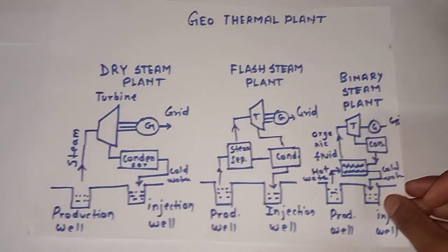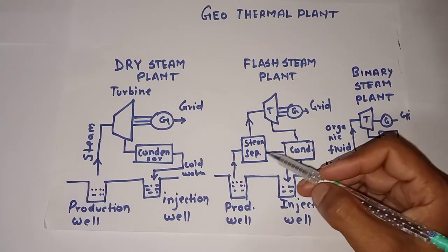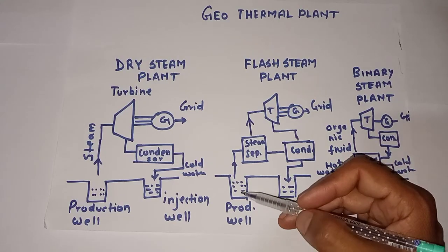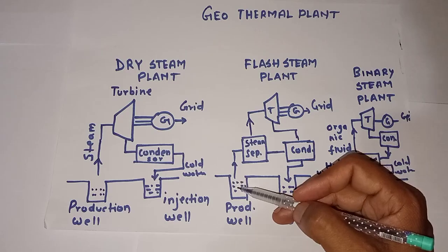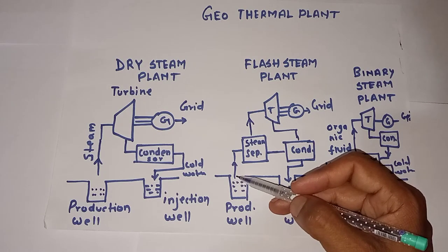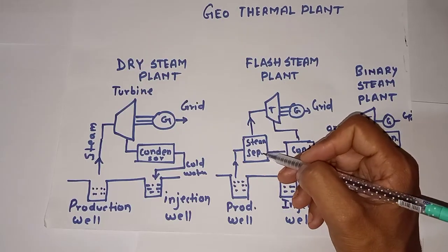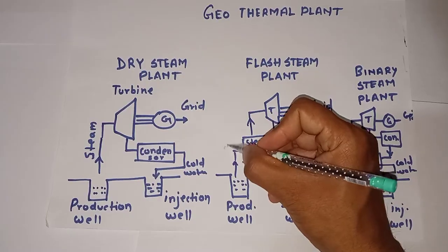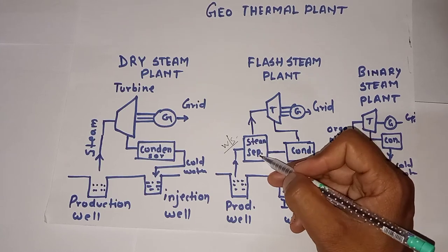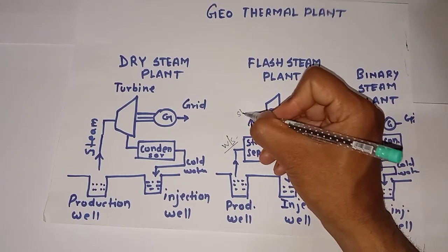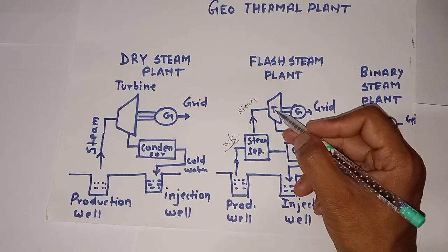The next type is called the flash steam plant. The difference from the dry steam plant is that an extra component is added. Whatever water and steam mixture comes up from the subsurface through the production well passes through a steam separator. The steam separator separates the water from the steam, and only the steam is sent to the turbine, where the turbine blades rotate.